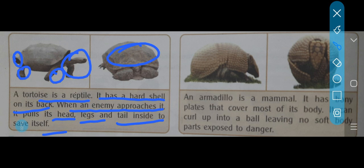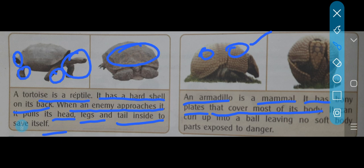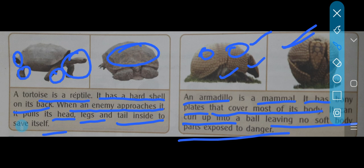Now, armadillo — it is also an animal placed in the mammal category. It has bony plates that cover most of its body. Its body is covered with small pieces of bone arranged like plates. You can see this in the picture. It can curl up into a ball — look, just like this, in the second picture — pulling its head, legs, and everything inward. When any enemy attacks it, it curls up completely, leaving no soft body parts like face or legs exposed to danger.